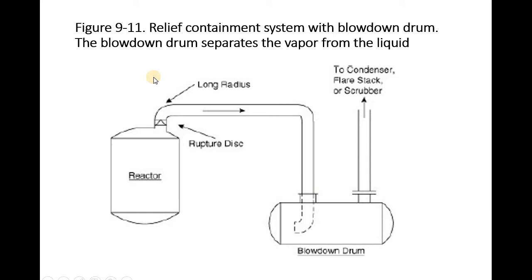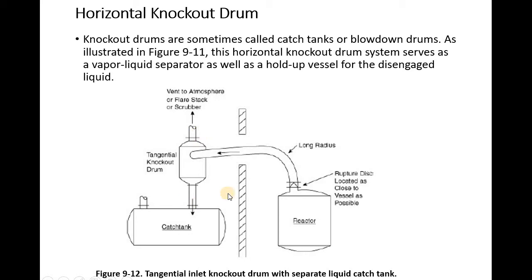Figure 9-11 shows a relief contaminant system with a blowdown drum that separates vapor from liquid. Material comes in, pressure drops, gases rise, and liquid settles. The gas can go to a flare, condenser, scrubber, or absorption unit. Similarly, from a reactor the stream goes to a knockout drum - also called a catch tank - which captures the liquid, and vapor goes up to a scrubber or flare system. The flare stack has a fire at the top, visible when you visit industrial sites.